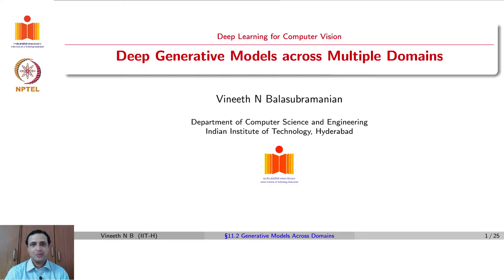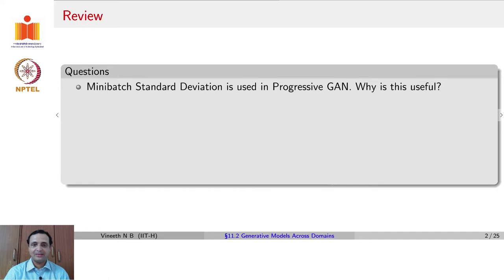In this lecture, we will talk about an interesting use case of GANs, which is generating images across domains. Before we get there, let us answer the questions that we left behind. One of the questions was: mini-batch standard deviation is used in Progressive GAN. Why is this useful?